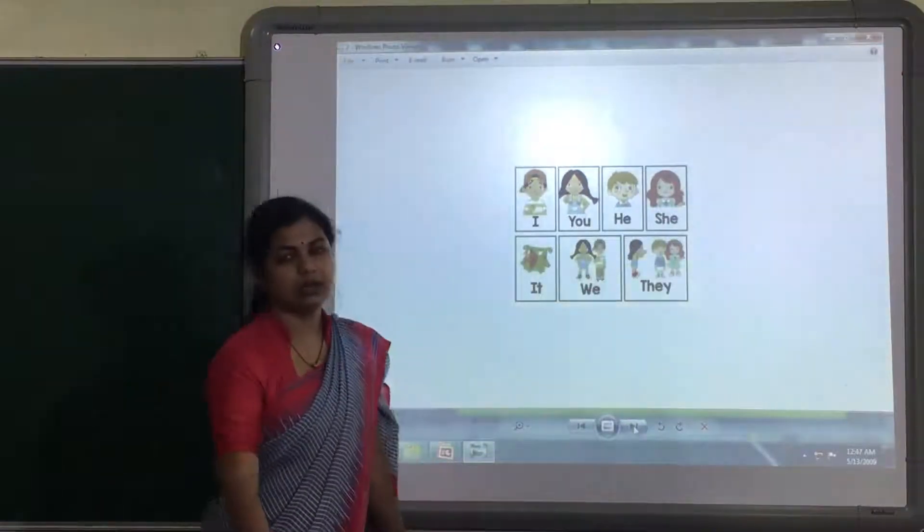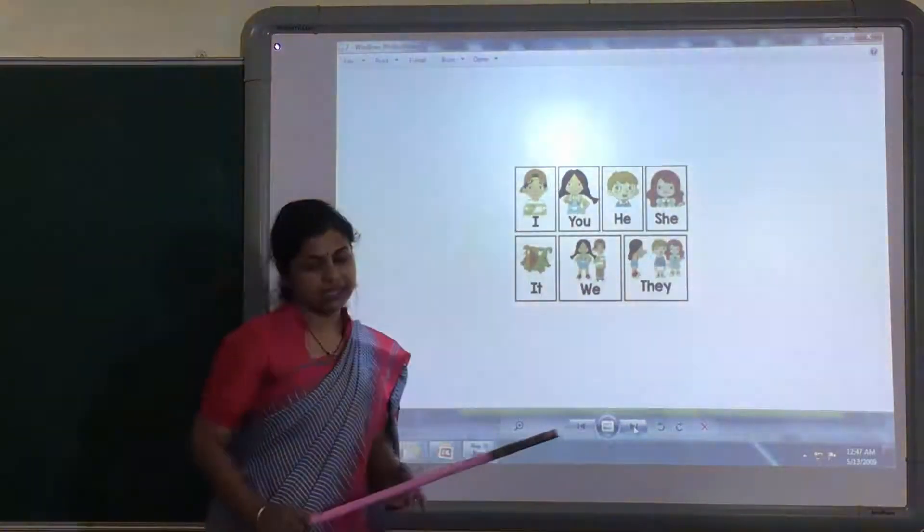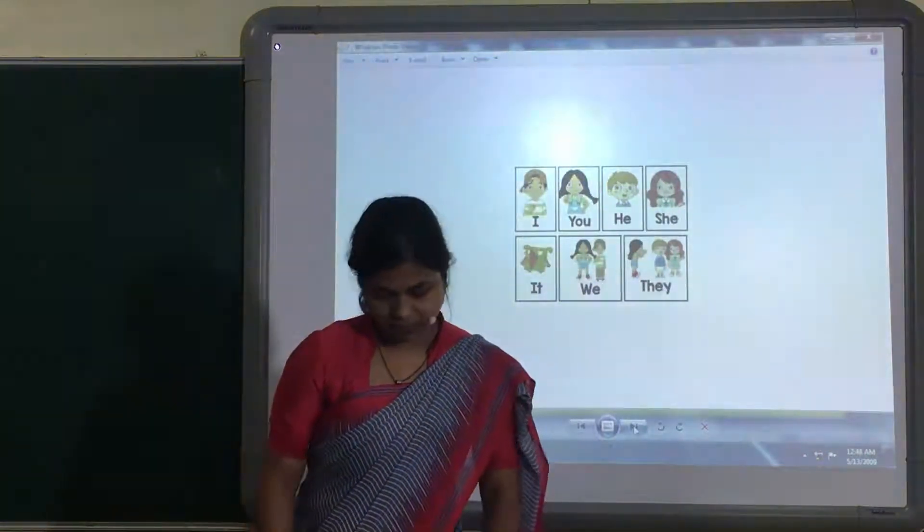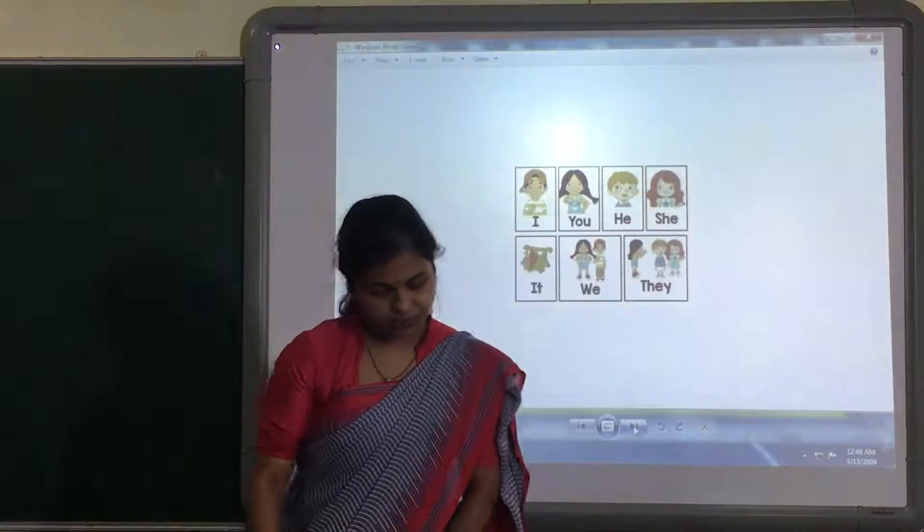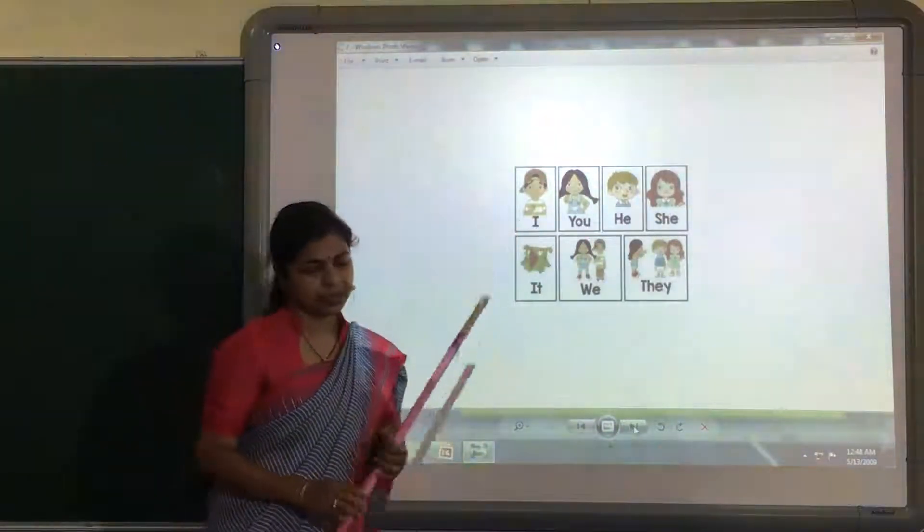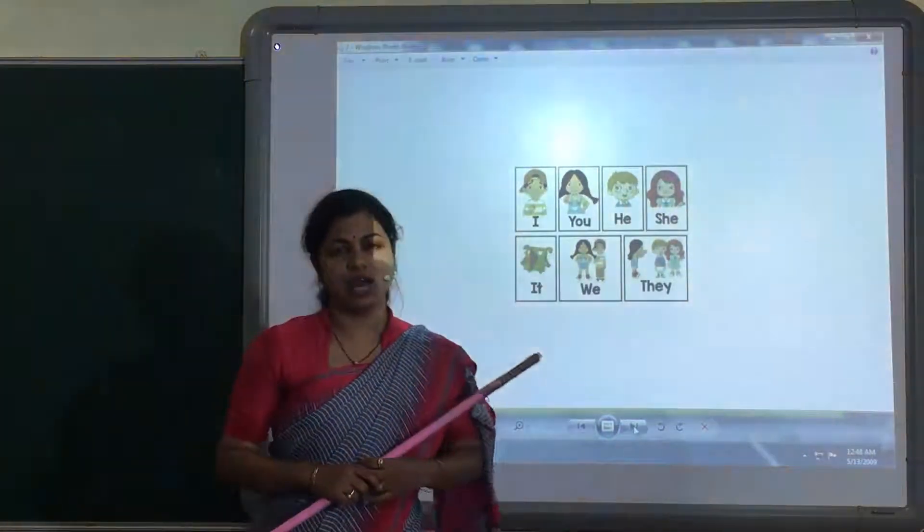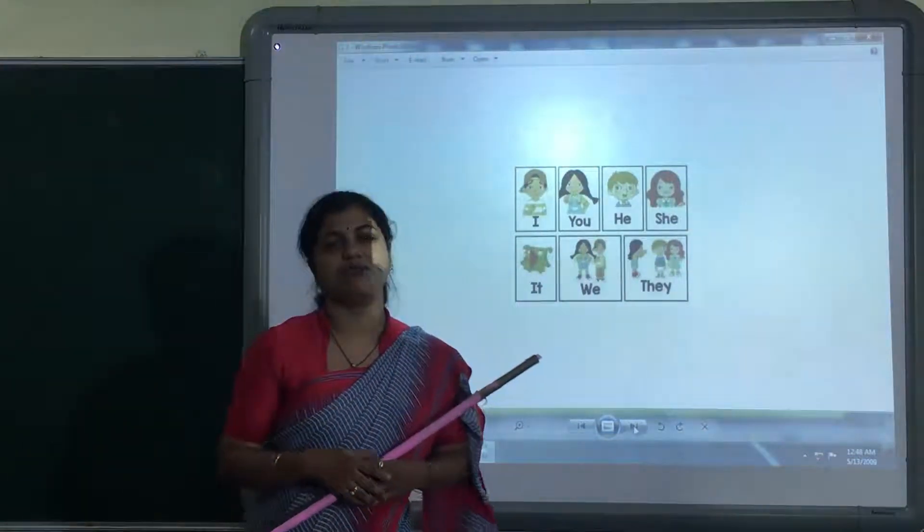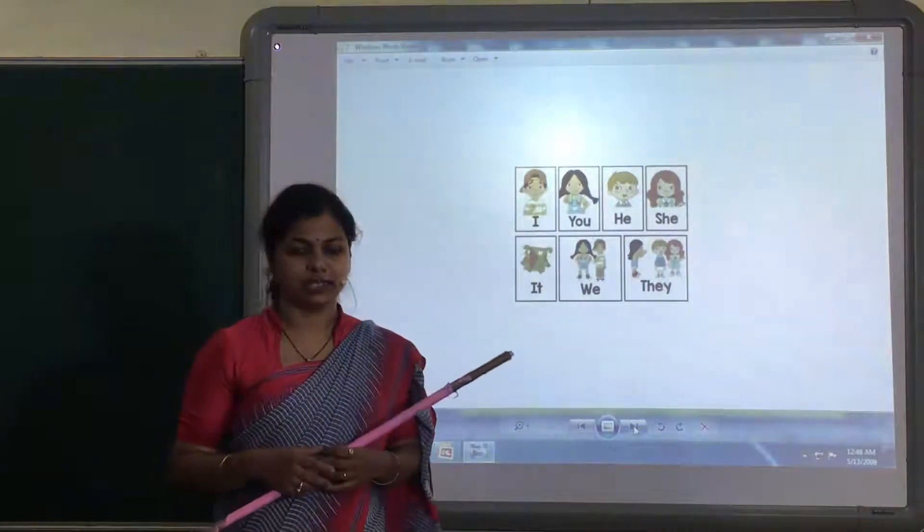Now, let us learn the use of all pronouns in detail. So, the first pronoun is I. We use I when we talk about ourselves. For example, I am 5 years old. I like to eat ice cream.